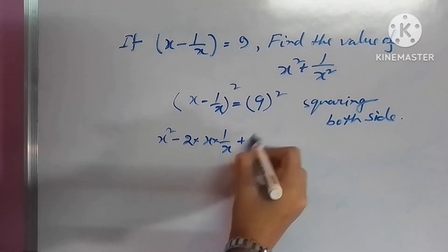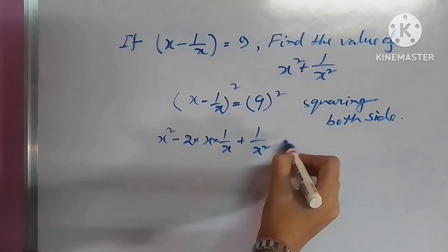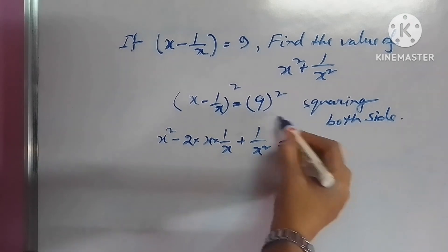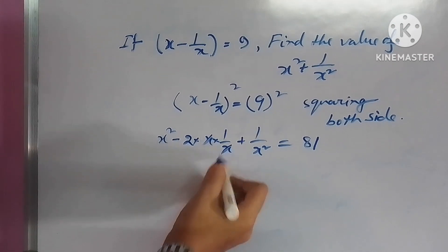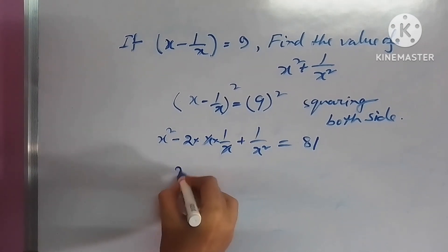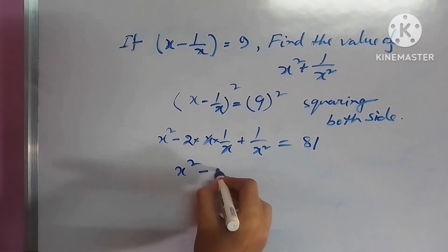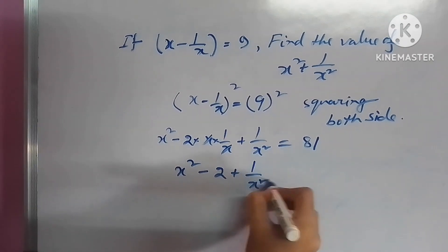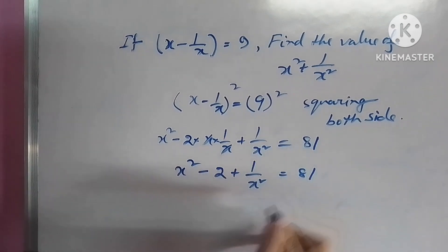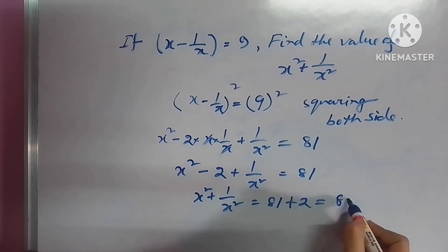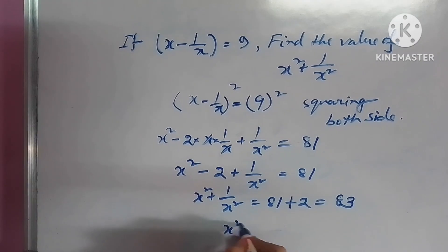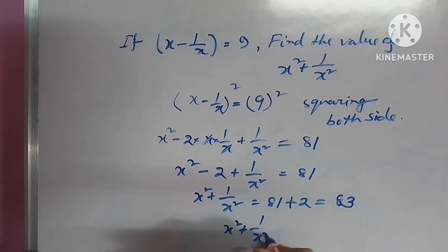(x - 1/x)². As per Identity 2, I am writing the value and on the right side, 9² means 81. After cancellation, we got the value x² - 2 + 1/x² = 81. And x² + 1/x² will be 81 + 2 = 83. That will be the ultimate value of the given expression.